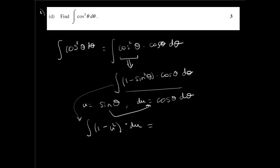It's just a matter of simple integration. The 1 becomes u, the u squared becomes, we increase the index from 2 to 3 and divide by the new index, and add c.